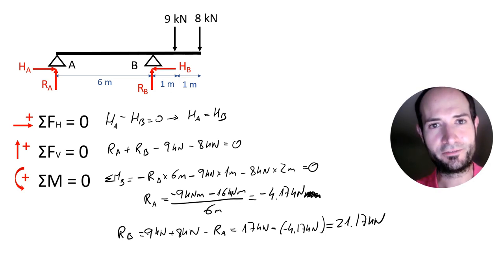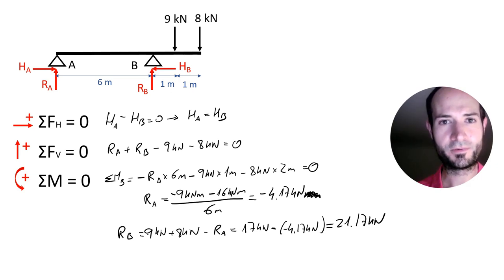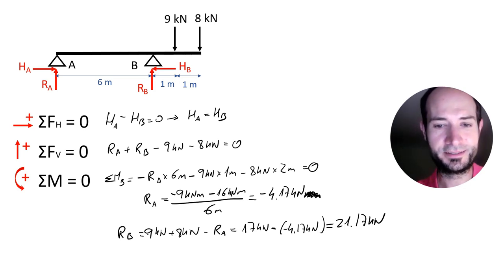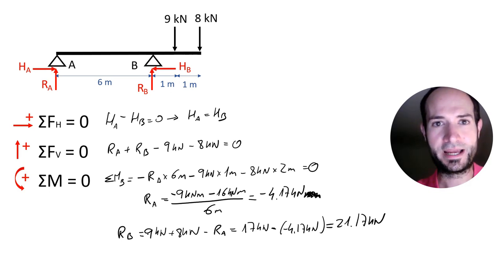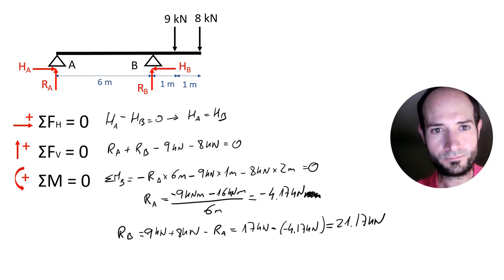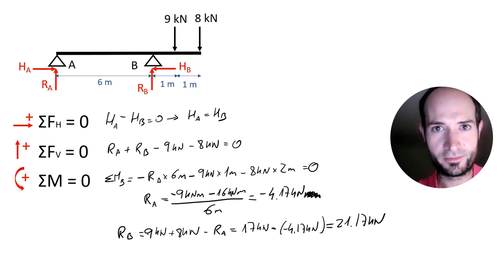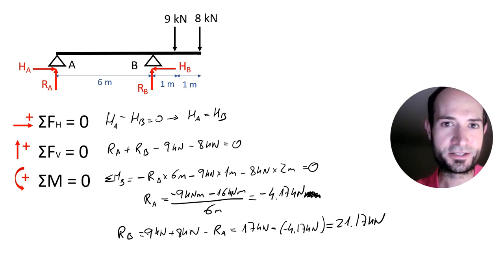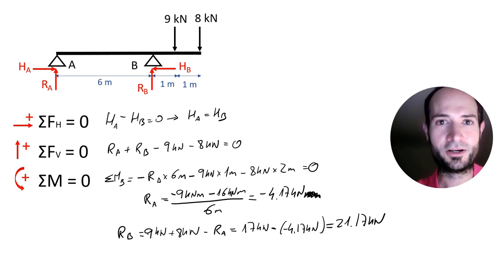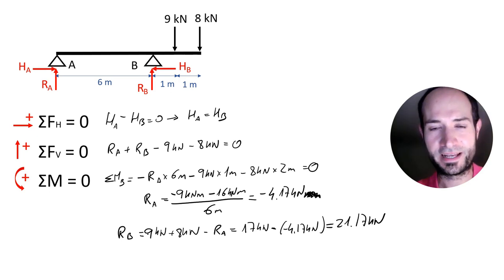So we have the fulcrum load RB equal to 21.17 kN, and we have an uplift on A equal to 4.17 kN. Does uplift occur always? It's very common — it depends on the structure, the scaffold you have on top, and the tailback. But always consider that you are going to get uplift on a cantilever.